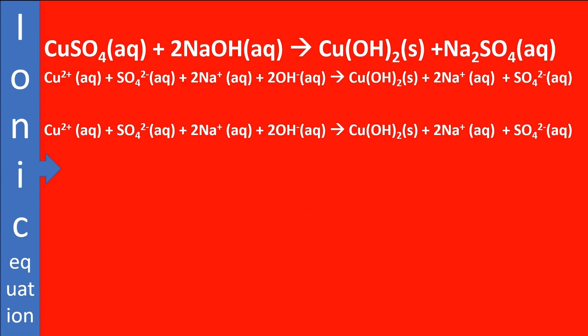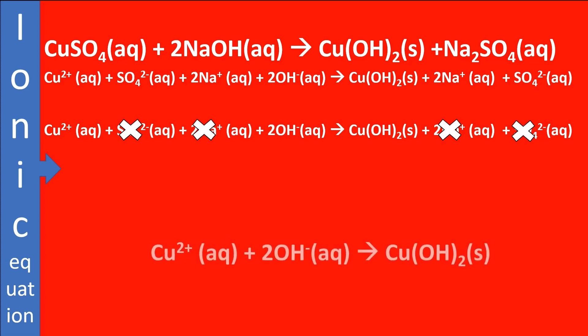You can clearly see the sulphate ions have not undergone any chemical change, therefore we can cancel them out. The sodium ions have also not undergone any chemical reaction. Finally, the only chemical change which has taken place is the combination of the metal ion and the hydroxide ions, which gives a hydroxide precipitate.